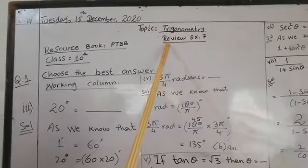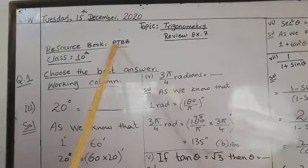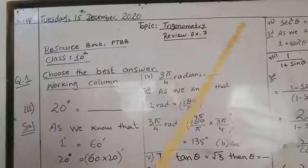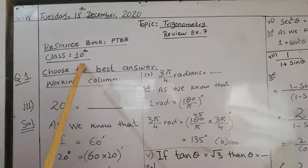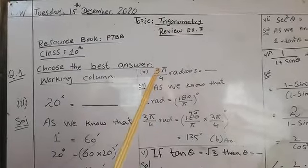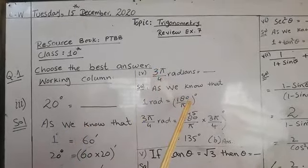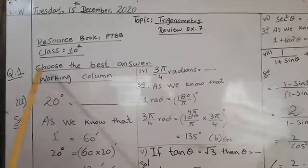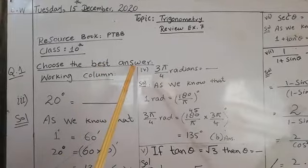Today we will discuss Review Exercise number 7 from the resource book of PTB, Punjab Textbook Board Bahawalpur, class 10th. In this exercise we will do some objectives in the form of MCQs and some definitions we will revise. So first of all we will move to question number one, which is about choosing the best answer — the MCQs.